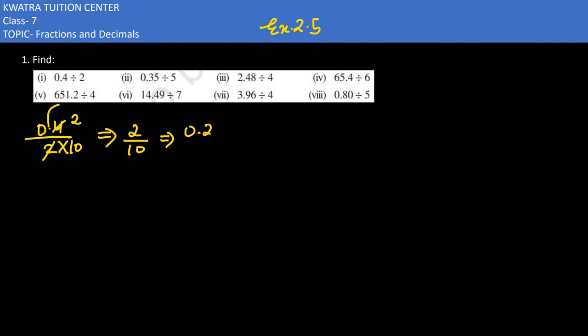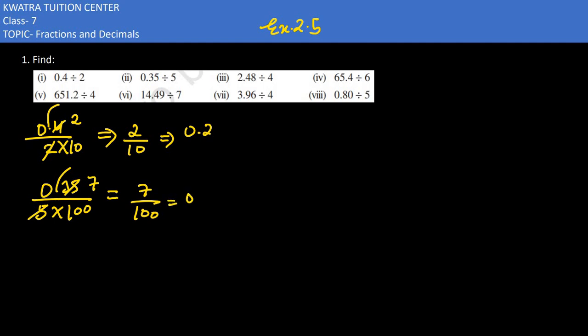The second part says 0.35 divided by 5. Remove the decimal — two decimal places means 100 comes in the denominator. 5 will cancel with the denominator. We get 35, then 7 will come. So 7 by 100 gives us 0.07.